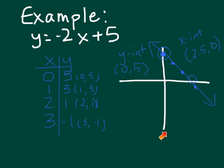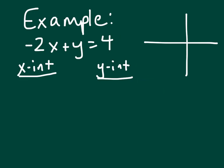Now, if I want to find the x-intercept, I am going to plug in a 0 for y. And if I want to find the y-intercept, I'm going to plug in a 0 for x. So let's look at an example.